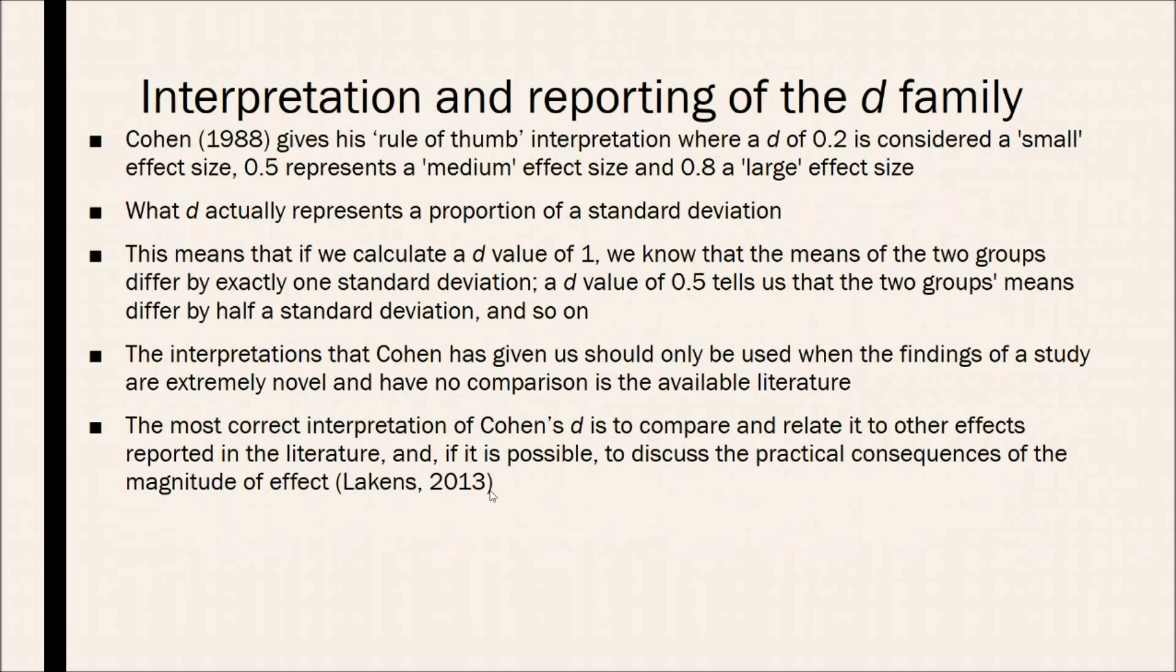It's now on to the interpretation and reporting of the D family. Cohen gives his rule of thumb interpretation where a D of 0.2 is considered small, 0.5 effect size represents a medium effect size, and 0.8 is a large effect size. Now, what D actually represents is a proportion of a standard deviation. This means that if we can calculate a D value of 1, we know that the means of the two groups differ by exactly one standard deviation, and a D value of 0.5 tells us that the two groups means differ by half a standard deviation, and so on.